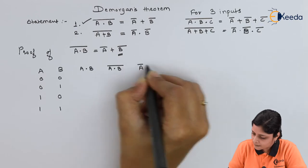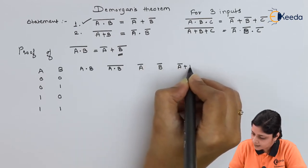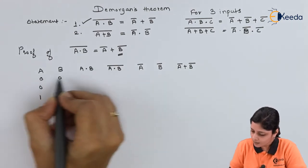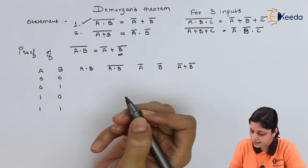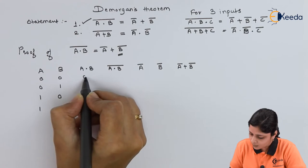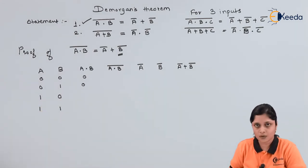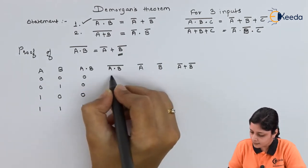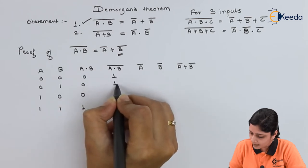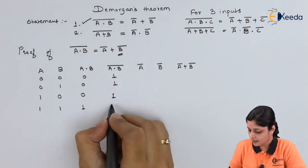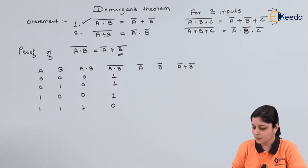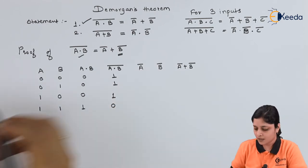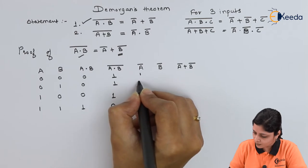We have A and B as two inputs, then A-bar, B-bar, and finally A-bar plus B-bar. For the AND operation: zero dot zero is zero, zero dot one is zero, one dot zero is zero, and one dot one is one. The complement of this column: complement of zero is one, one, one, and complement of one is zero.